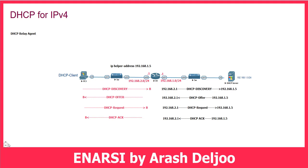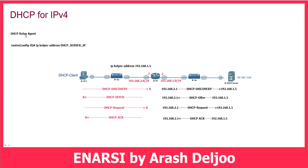Don't forget: we need to configure 'ip helper-address' followed by the DHCP server IP on the router interface that is residing in the LAN. If you configure an incorrect IP address, the systems cannot receive an IP from the DHCP server. The command is: router(config-if)# ip helper-address [DHCP server IP].